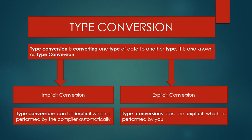Hello friends. In this video tutorial we discuss about type conversion. Type conversion is converting one type of data to another type. There are two types of type conversion: implicit conversion and explicit conversion. In implicit type conversion, it is performed by the compiler automatically. In explicit conversion, the type conversion is performed by you.